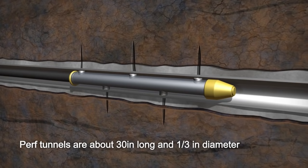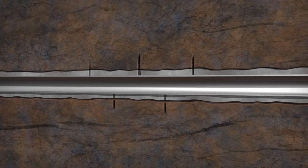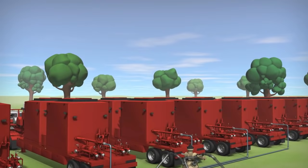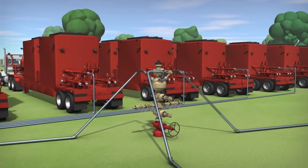The perforation guns are then removed in preparation for the next step: hydraulic fracturing. A fleet of pump trucks capable of up to 40,000 horsepower are used to send a mixture of mostly water and sand deep into the wellbore and out into the perf tunnels.